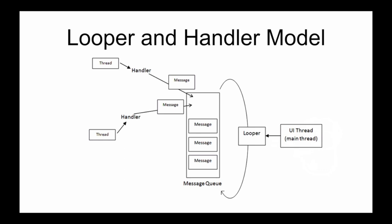Let's understand how this whole system works. There is a message queue that belongs to a thread — here we discuss the main thread. The main thread has a message queue, and the looper associated with the main thread keeps it alive. Various handlers are associated with this looper. Any other thread can use a handler associated with the main thread to enqueue messages. When the looper dequeues a message, it delivers it to the corresponding handler. The handler then executes that message using the thread it is associated with.